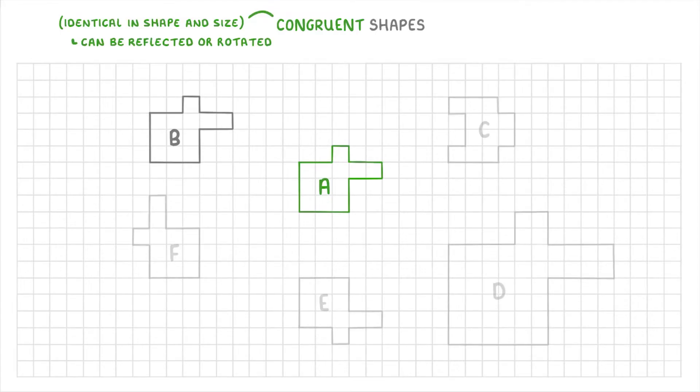So if you start with B, it's fairly easy to see that this one would be considered congruent, because it's exactly the same shape and size, and it's even the same orientation, which just means that it hasn't been rotated at all.